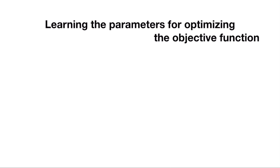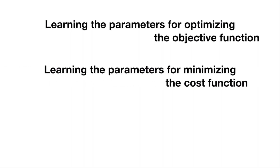We know we have to find some optimal values, but we don't know whether it is a minimization or maximization function. If it is a minimization function, we can rewrite this as 'learning the parameters for minimizing the cost function.'